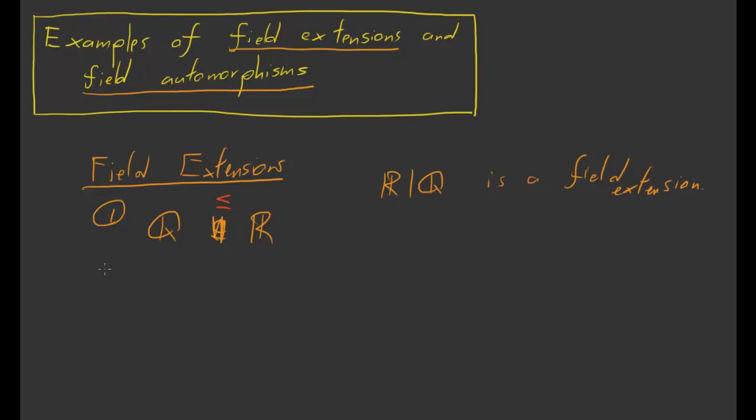The second example is the real numbers inside of the complex numbers. So that means that C over R is a field extension.